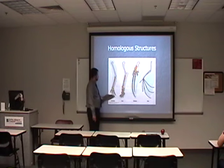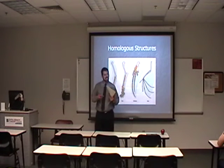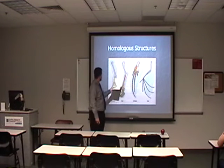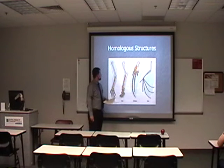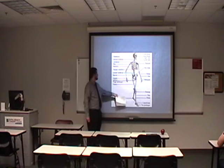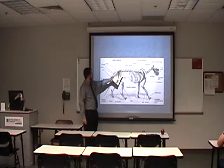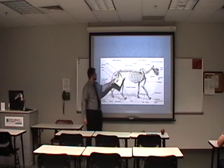The number of bones doesn't change, and the order in which the bones are connected doesn't change. The only thing that changes is the function, size, and shape of the bone. This is called a homologous structure. And if you look, the whole skeleton is like that.